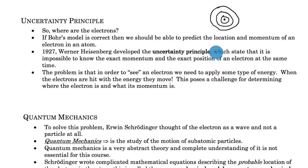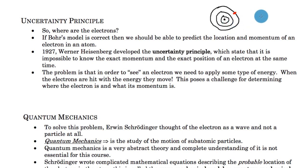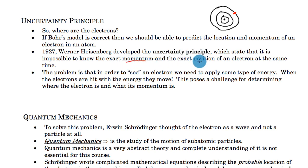Werner Heisenberg in 1927 looked at this model and tried to come up with some other explanations. He realized that if you're trying to figure out information about an electron — where it is and where it's going — we can do that with the Earth going around the Sun: we know where it is, where it's going, and where it will be. But Heisenberg realized you can't do that with the electron. To know where it is or where it's going, you need to know two things: its momentum and its position.